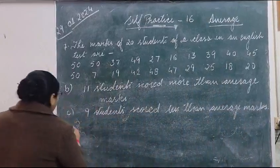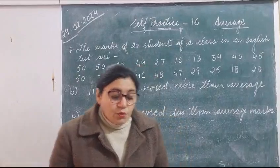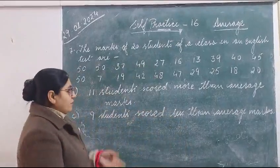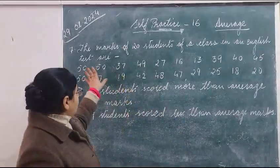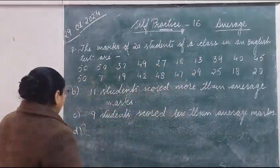Now in the next part it is asked: how many students scored marks equal to the average marks? Equal to 33.55, nobody has scored 33.55. So you will write answer: None.